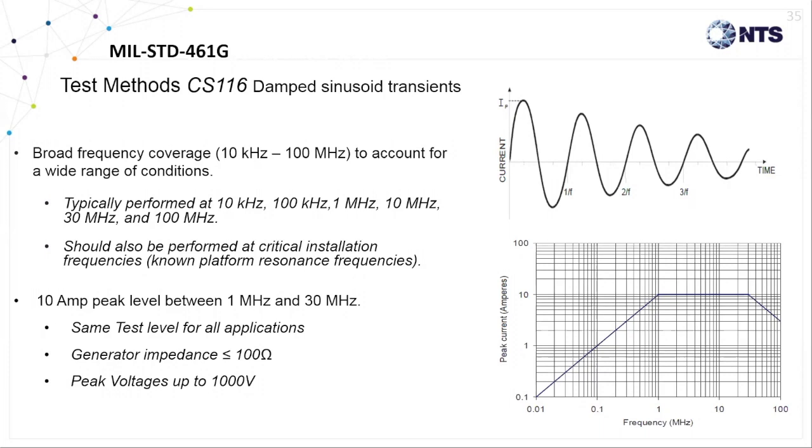The test damped sinusoidal waveform is applied at a range of discrete frequencies from 10 kilohertz to 100 megahertz in order to locate a particular cable resonant frequency. However, the cable resonant frequency, if it's known and resides within the CS116 test frequency range, it should also be tested.